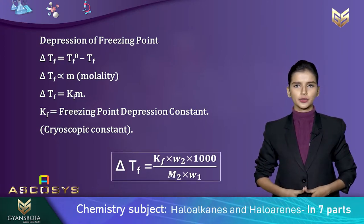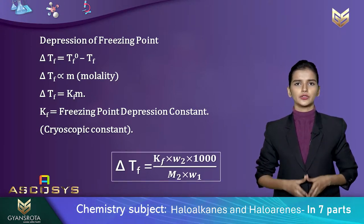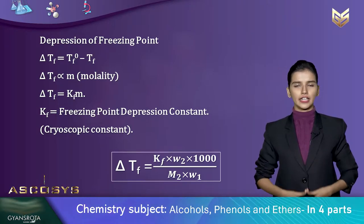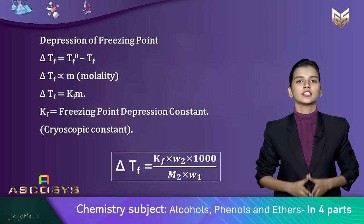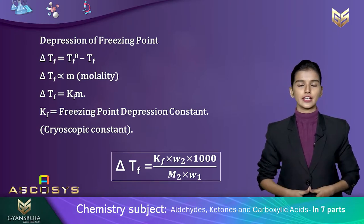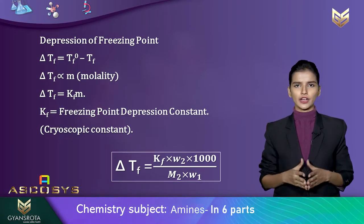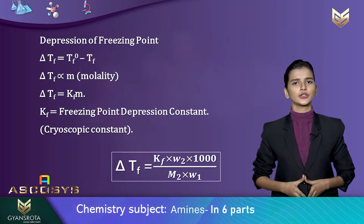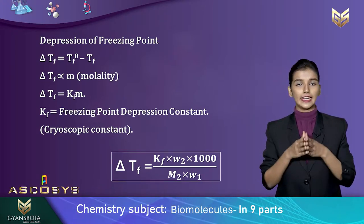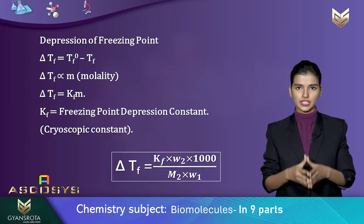This expression leads to delta Tf equals Kf times w2 times 1000, divided by m1 times w1. In this formula, w2, m2, w1, and m1 are the relevant quantities. Kf is the cryoscopic constant and delta Tf is the expression for the depression in freezing point.